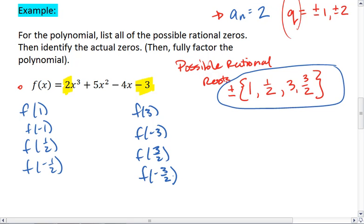We do some calculator magic. Plugging in these values, we find that f(1) = 0, f(-1) = 4, f(1/2) = -3.5, f(-1/2) = 0, f(3) = 84, f(-3) = 0, f(3/2) = 9, and f(-3/2) = 7.5.